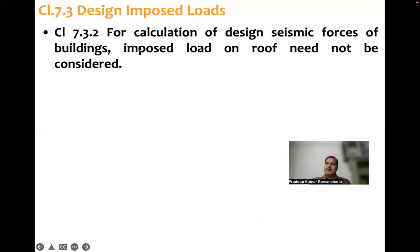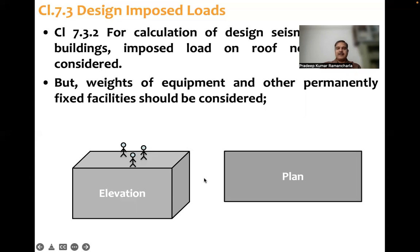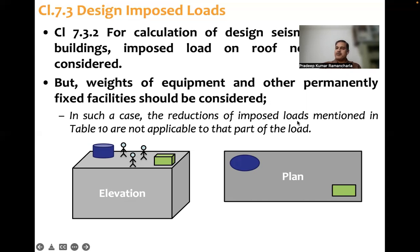For the calculation of design seismic force of buildings, imposed load on the roof need not be considered, because there is less likelihood that when an earthquake occurs, people are on the terrace. However, the weights of equipment and other permanently fixed facilities — such as a water tank or generator structure — should be considered fully. The reduction of imposed loads mentioned in Table 10 is not applicable to those permanent loads. Weight of people on the roof is not required to be considered.